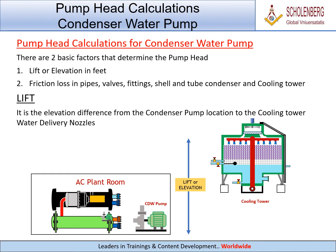Pump head calculations for condenser water pump. There are two basic factors that determine the pump head: 1. Lift or elevation head. 2. Friction loss in pipes, valves, fittings, shell and tube condenser, and cooling tower.